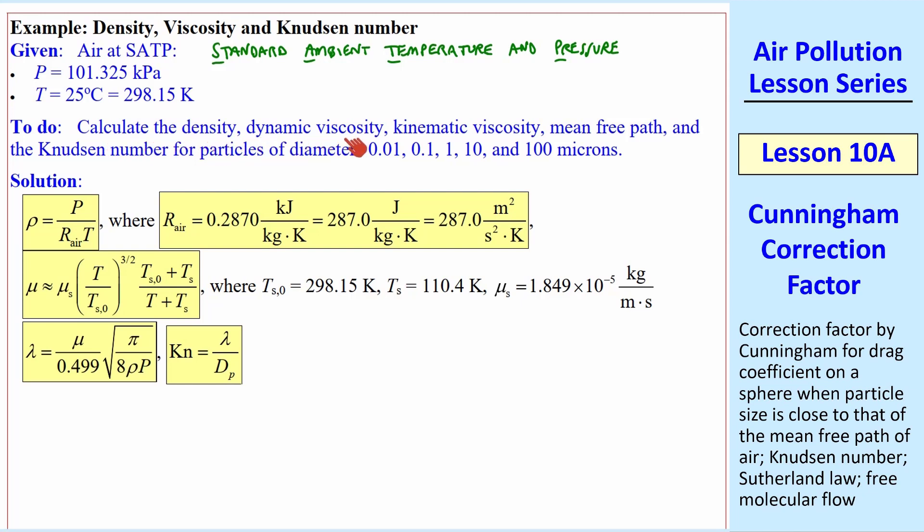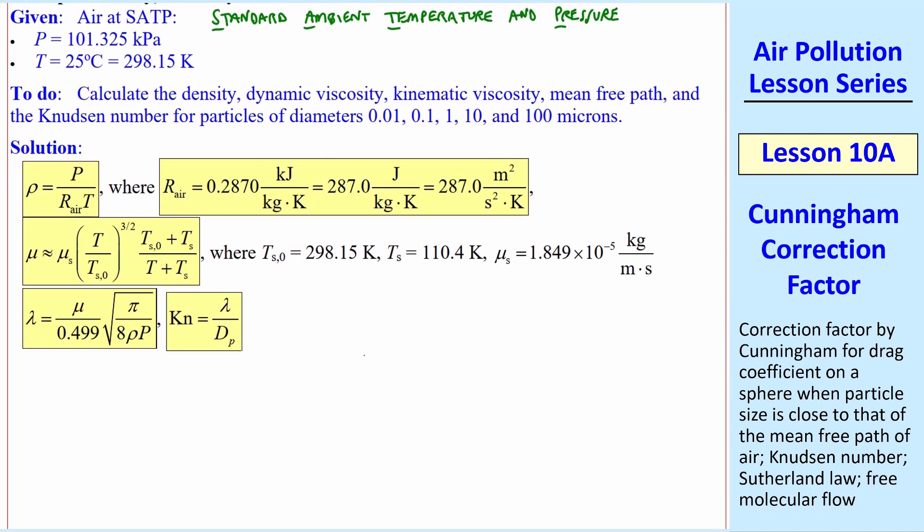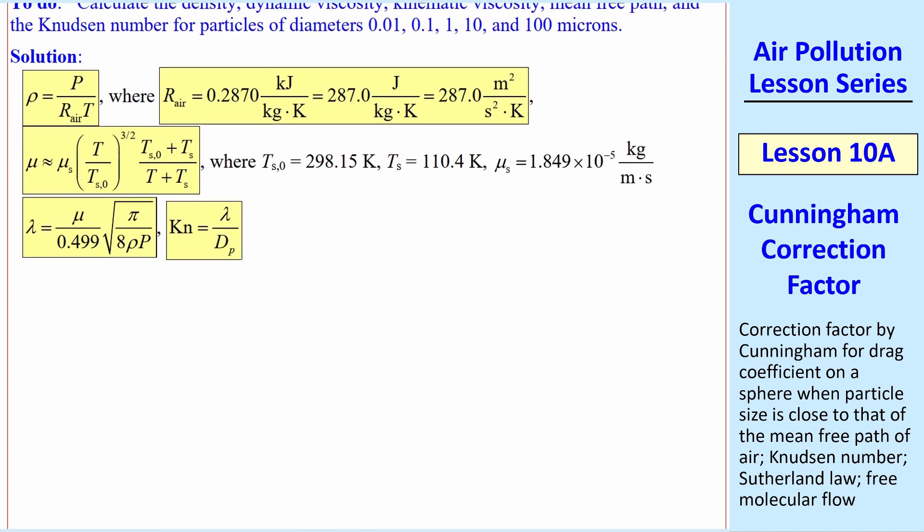In this problem, we want to calculate the density, dynamic viscosity, kinematic viscosity, mean free path, and Knudsen number for particles of various diameters. I duplicated the equations here, and we plug in the numbers to do our calculations. Density, p over rt, a unity conversion factor, and we get rho for air at SATP.